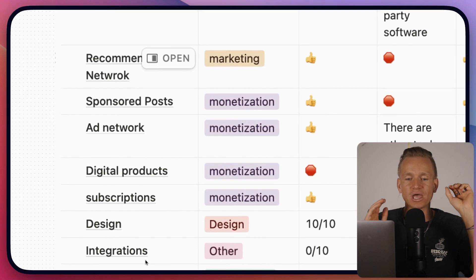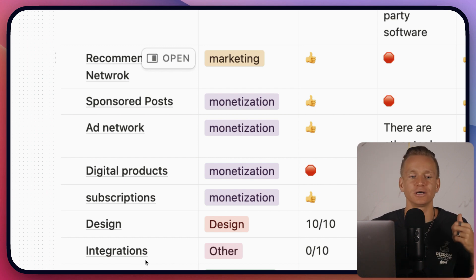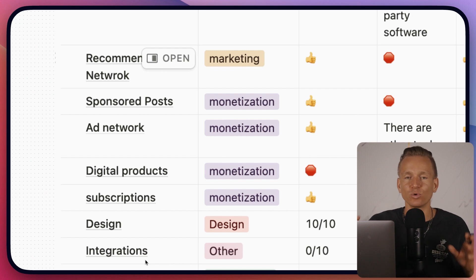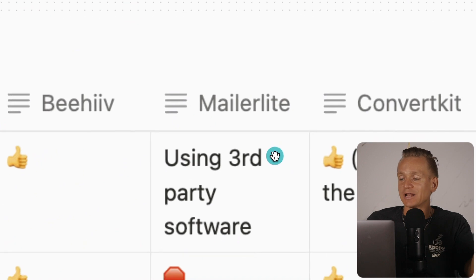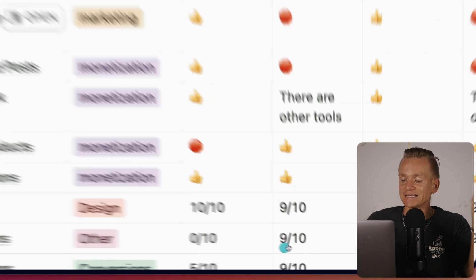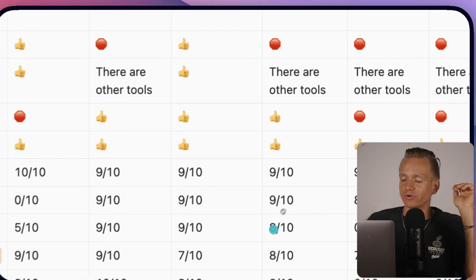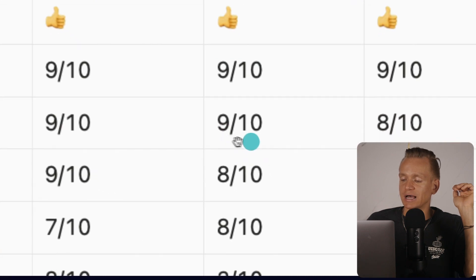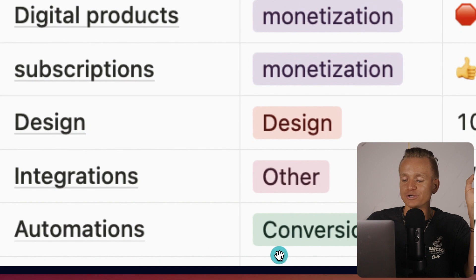Next is integrations. If you're using other tools — like Shopify, WordPress, or ad platforms — you'll need solid integrations, especially to build a big business. MailerLite has been around for a long time and rates a 9 out of 10 for integrations, with literally hundreds of different integrations available. Mailchimp is also great for integrations — I'd rate it a 9 out of 10 as well.